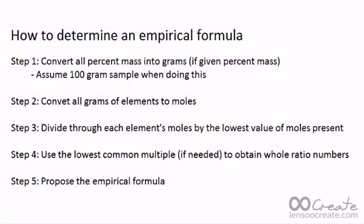So then finally, if you needed to do that, you'd multiply through and then propose the empirical formula. So I'm going to walk through an example. Those are the general rules. And the example that I want to use is ascorbic acid, which is vitamin C. So let's go ahead and I'm going to write down.